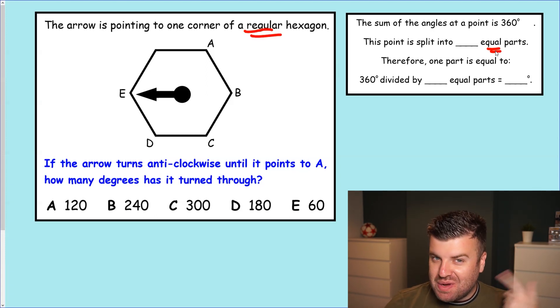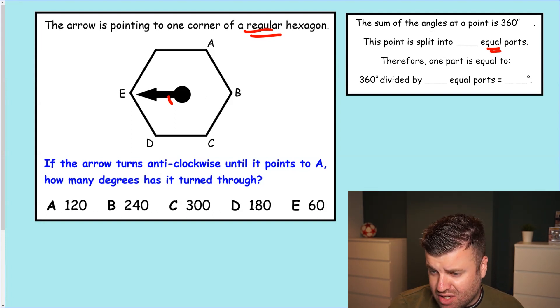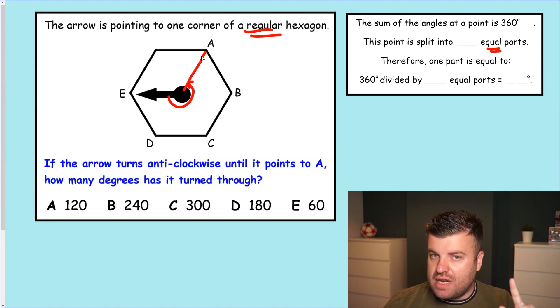So here's where the question differs slightly. It's pointed to a corner of a regular hexagon. If the arrow turns anticlockwise until it points to A, how many degrees has it turned through? Well, we know what normally would happen if children didn't know this technique. They'd go from A, they'd start drawing a line around. They'd go to there. They'd say, oh, is that roughly, it's over 180, is it 200 and something? We wouldn't get an accurate answer. We know what to do.